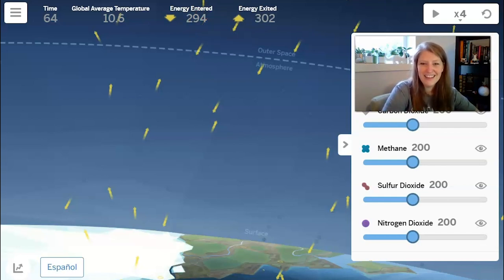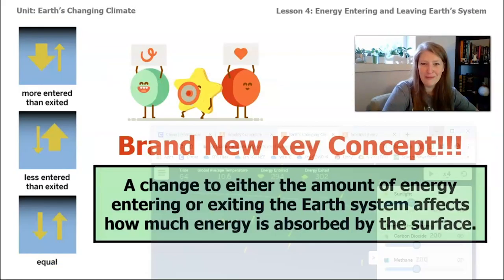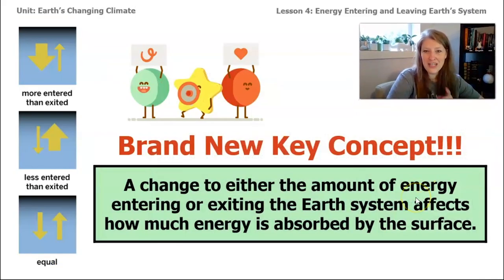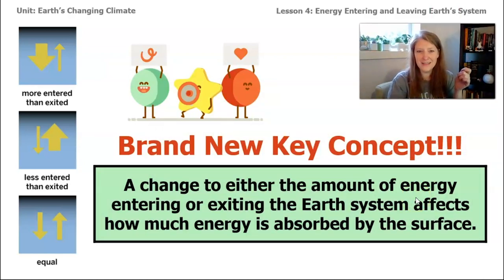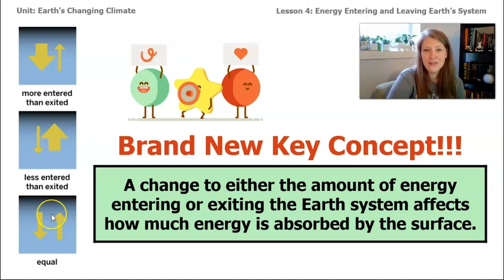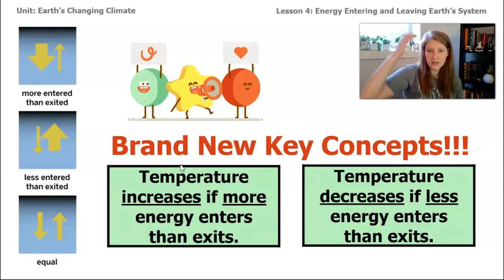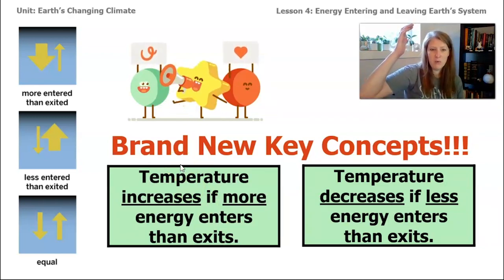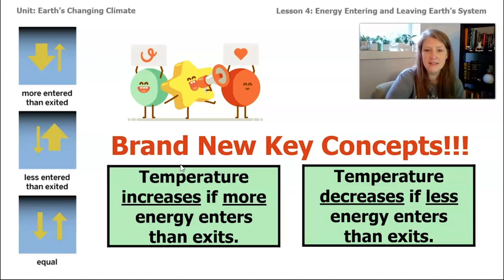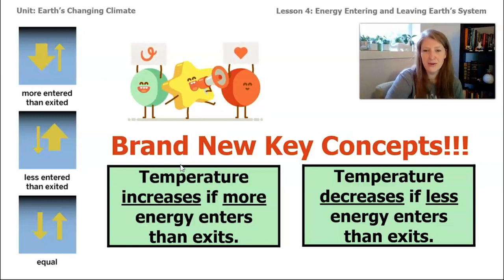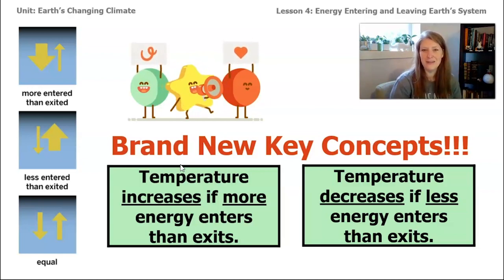This is a brand new key concept we've just learned for this unit: a change to either the amount of energy entering or exiting the system can affect how much energy is absorbed by the surface. This breaks down into two smaller key concepts: temperature increases if more energy enters than exits, and temperature decreases if less energy enters than exits.